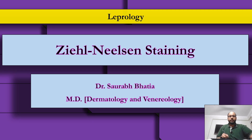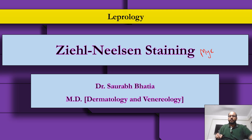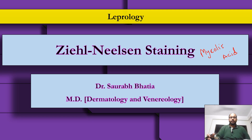Good evening everyone. Last week we discussed the biology of M. leprae in detail, including the structure of its cell wall. The main constituent that makes this bacterium different from others is the high concentration of mycolic acid. Utilizing this fact, we have a different stain for M. leprae used in laboratory practice, known as the Ziehl-Neelsen staining or the modified Ziehl-Neelsen staining. This is what we will learn today.